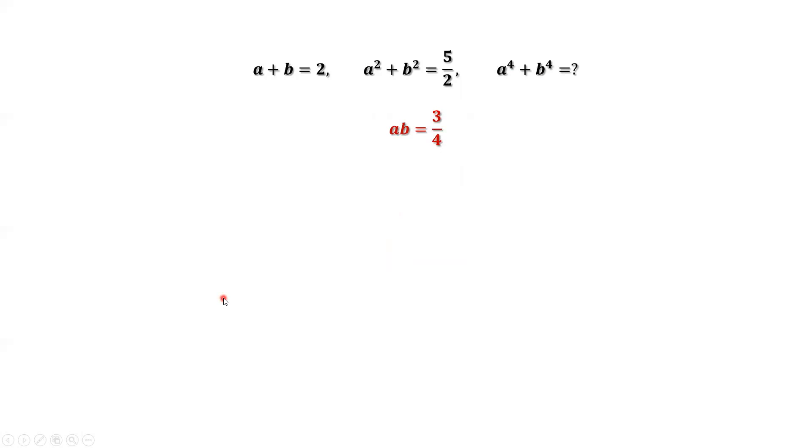We have three results now. a plus b equals 2, a times b equals 3 fourths, a squared plus b squared equals 5 halves.